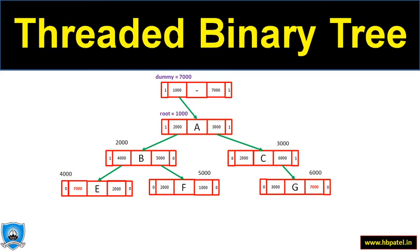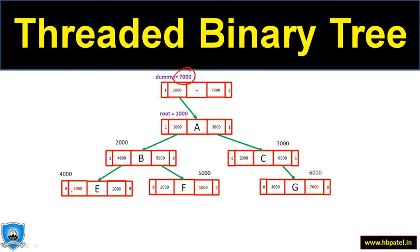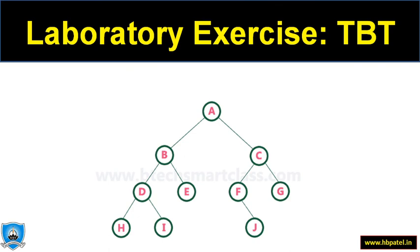One more thing: we do not want any null pointers in our threaded binary tree. So we create an extra dummy node with no data. The left pointer of the dummy node points to the root, and the right pointer points to itself. The leftmost and rightmost pointers that we originally set to null will now point to this dummy node instead.